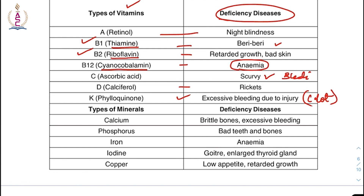Types of minerals and deficiencies: Calcium is very important for bones — deficiency causes brittle bones. Phosphorus is important for teeth and bones. Iron deficiency causes anemia. Iodine deficiency causes goitre, which is an enlarged thyroid gland. Copper deficiency causes retarded growth.